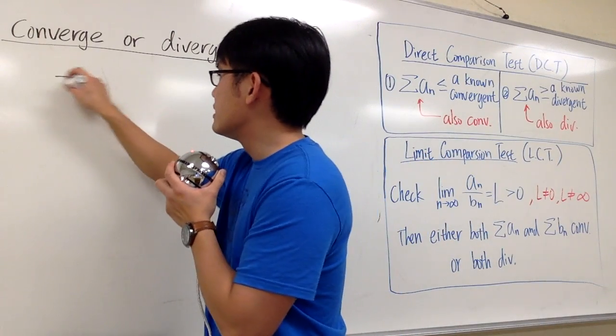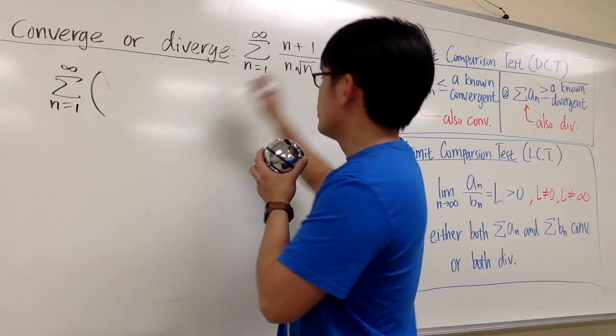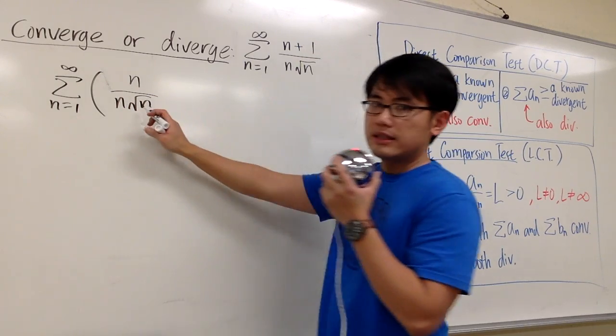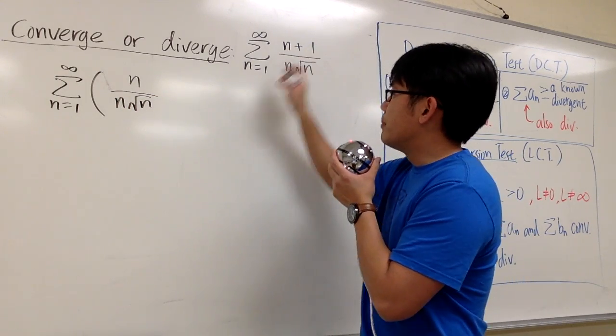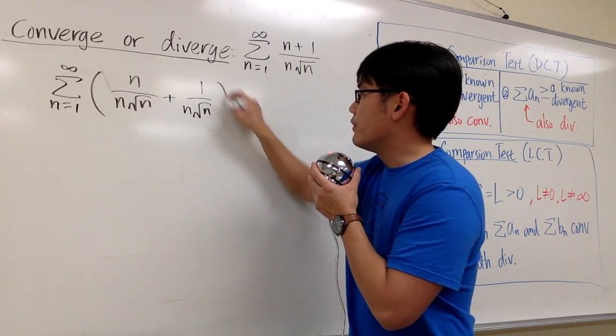So let's look at that as sigma when n goes from 1 to infinity, and then I will look at this as n over n times square of n as the first fraction, and then plus 1 over n square root of n.